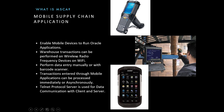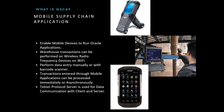Warehouse transactions can be performed on the wireless radio frequency device over Wi-Fi. The devices are typically connected to the Wi-Fi in the warehouse or manufacturing facility where transactions are being performed. They connect to the wireless network of that particular organization, allowing business users to perform those transactions on screen.